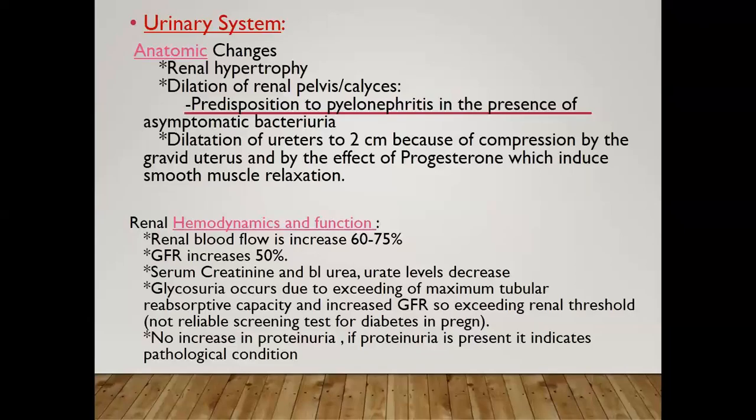Regarding the urinary system, the anatomical changes include renal hypertrophy, increasing the kidney size. There is also dilatation of the renal pelvis and calyces. This will predispose to stagnation of urine and pyelonephritis in the presence of asymptomatic bacteriuria. There is also dilatation of the ureter up to 2 cm.